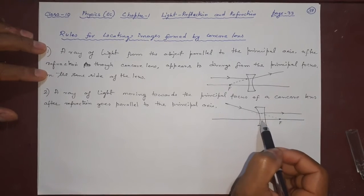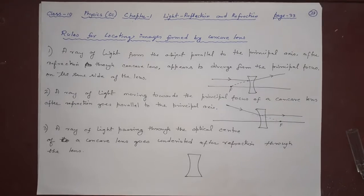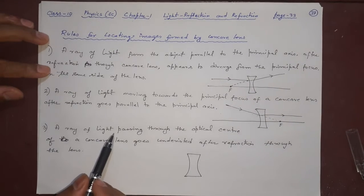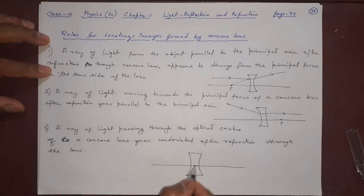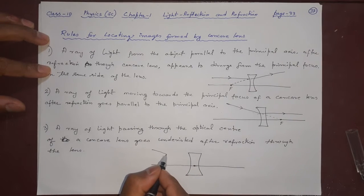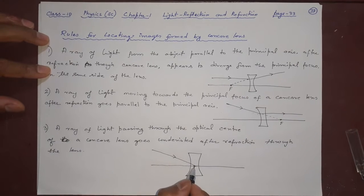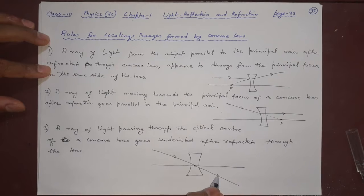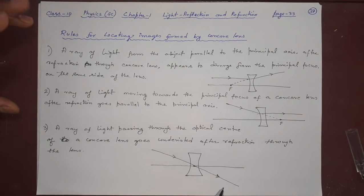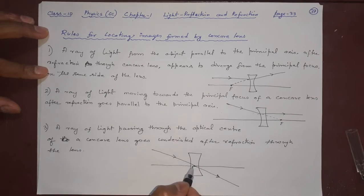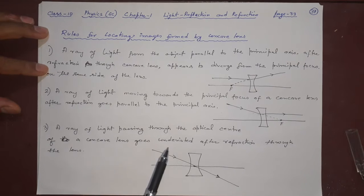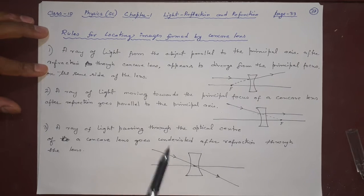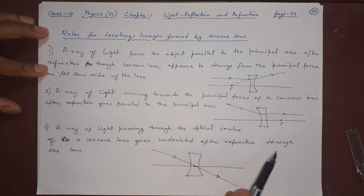The third rule says: if a ray of light passes through the optical center — this is the optical center on the principal axis — nothing will happen to it. It will go as it is, just like in the mirror where a ray from the center of curvature is unaffected. Here, with a lens, a ray through the optical center will not bend at all. This is called undeviated — deviate means to move away from its path, so undeviated means nothing happens to it after refraction through the lens.